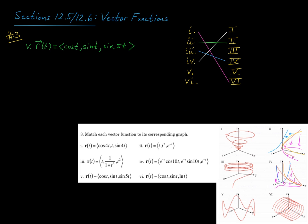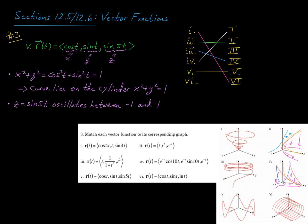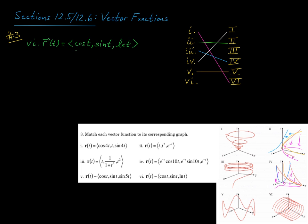Two more: for function 5, cos t, sine t, sine of 5t. Notice x squared plus y squared equals 1 by the Pythagorean identity, so the curve lies on the cylinder x squared plus y squared equals 1. Both graphs 3 and 5 appear to lie on a cylinder, and notice the i and j components for vector functions 5 and 6 are the same — it's the k components that differ. Here the k component is sine of 5t, which oscillates between negative 1 and 1. So it's got to be graph 5, and projecting onto the xy plane we just see circular motion. Function 5 pairs with graph 5.